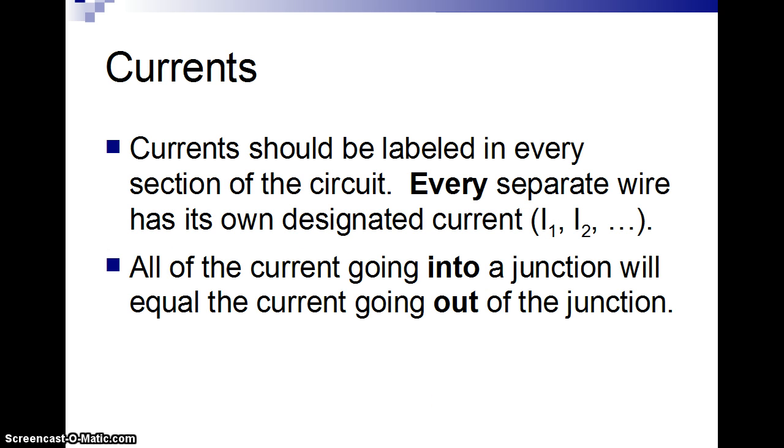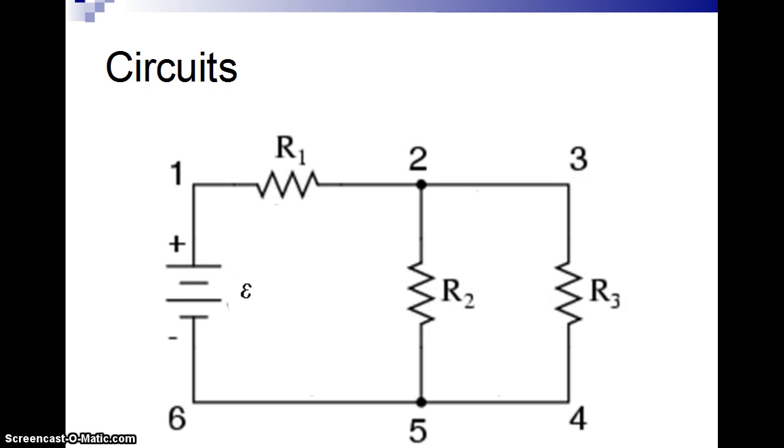So basically, every time there's a junction, you can treat everything going into and coming out of the junction as a separate wire. And we're going to treat each of those as being a separate current. And so all the current going into the junction equals the current going out.